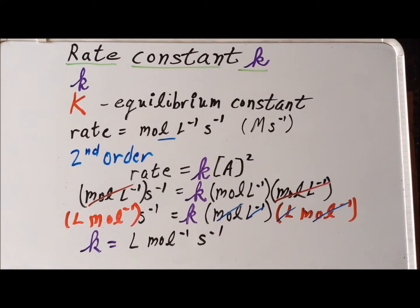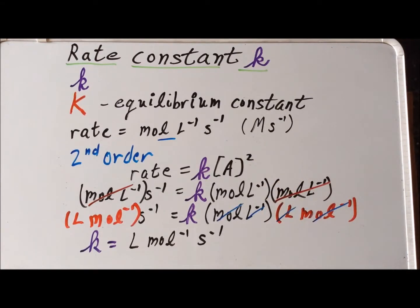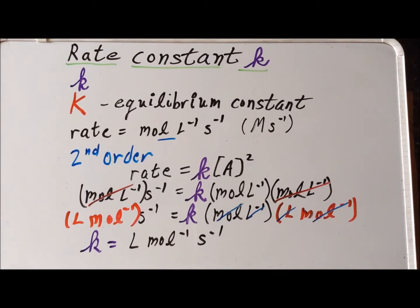One last note: the order of a reaction is an experimental quantity, and the exponent is not limited to integers. It can be a half-integer or any fractional quantity. The examples shown here work for integral orders — zero, first, or second.